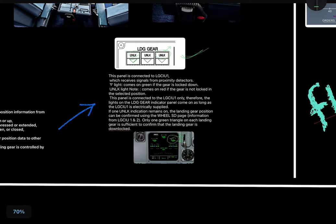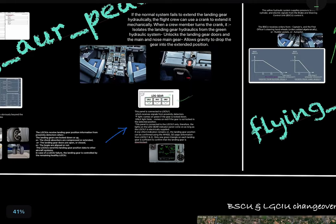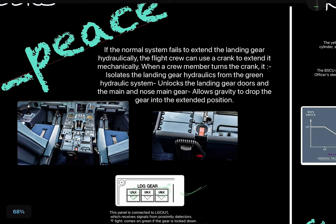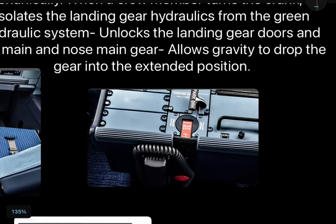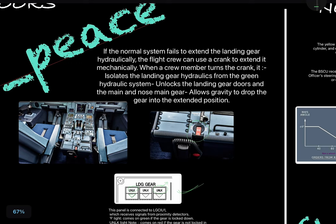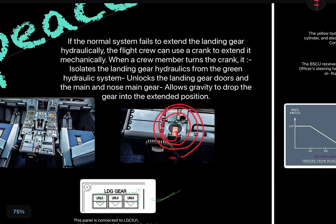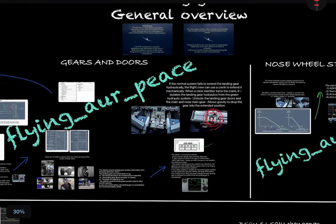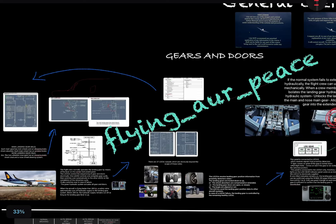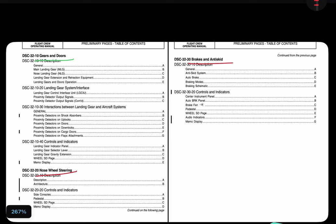If you can see one triangle it means the landing gear is down and locked. Now, regarding gravity extension: if the normal system fails to extend the landing gear hydraulically, the flight crew can use a crank to extend it mechanically. The flight crew rotates it three times clockwise. This rotation will isolate the landing gear from the green hydraulic system, unlock the landing gear doors, unlock the main and nose gears, and allow gravity to drop the gears into the extended position.